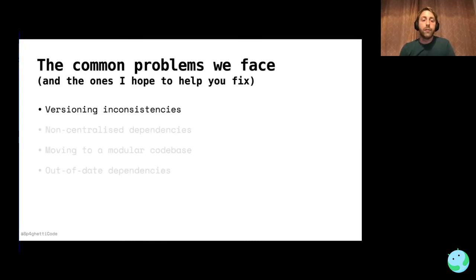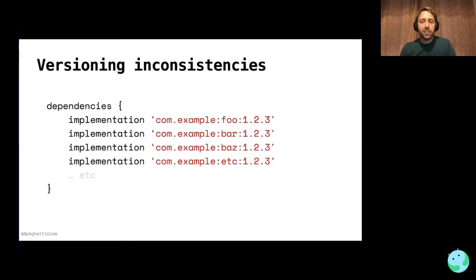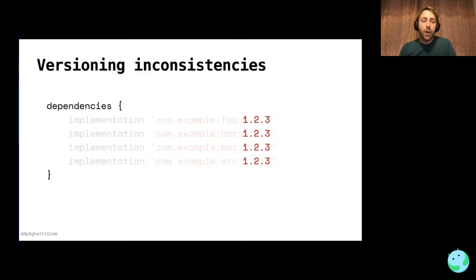Let's kick off with versioning inconsistencies. What I mean by this is having a large build.gradle file with multiple dependencies, all with very similar version numbers, which doesn't really scale. This is quite a common problem many developers face, especially in legacy codebases or codebases new to people. As you can see in this example, there is a common denominator — all dependencies share the same version.